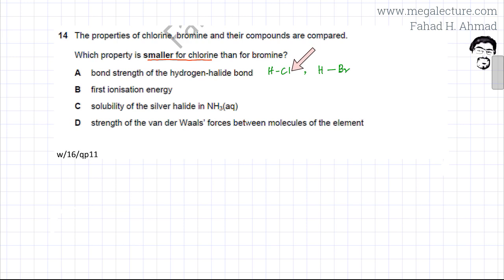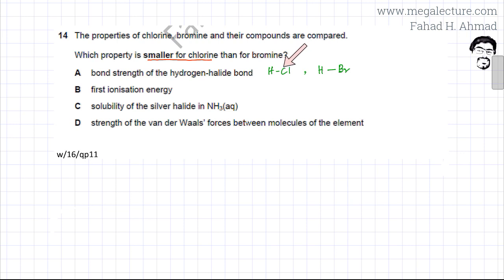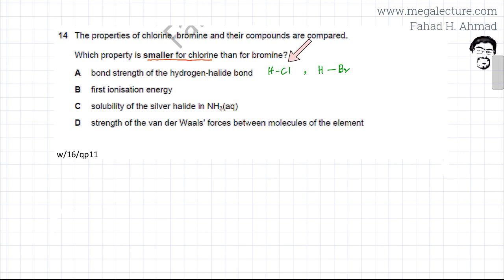In the case of HCl, chlorine is a smaller atom, so its electrons are less shielded and its attraction for the shared electrons is stronger. HCl is therefore able to attract the shared pair of electrons between H and Cl more strongly, making it a stronger bond. So the bond strength of the hydrogen halide is actually greater for chlorine — option A is incorrect.